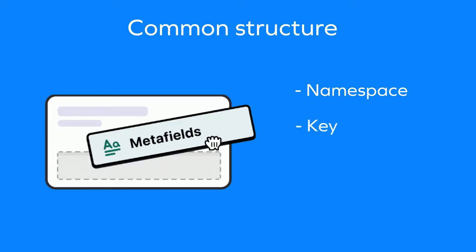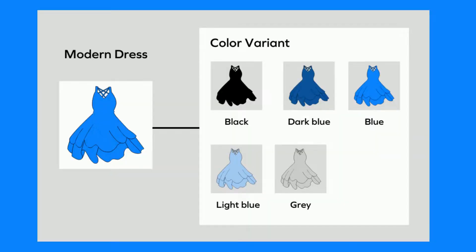The namespace helps distinguish the types of meta fields used and in what ways. A key contains the name or label of the specific meta field — a good way to think about it is as an identifier. Self-evidently, the value is the actual value of the meta field itself.